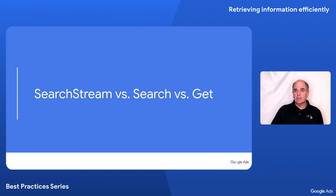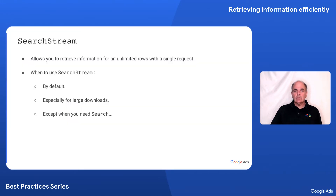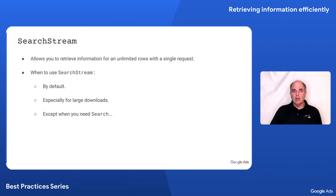There are three methods for retrieving information: search stream, search, and get. Search stream allows you to retrieve an unlimited number of rows with a single request. The result is all streamed back in a single response, which is why it is called search stream. Because it is very efficient, it should be the default method that you use. It is especially valuable for large downloads.